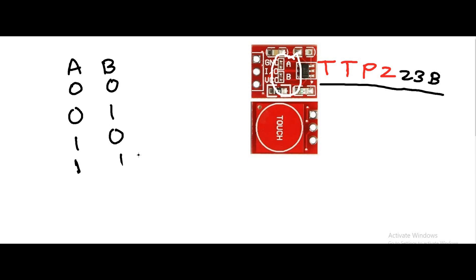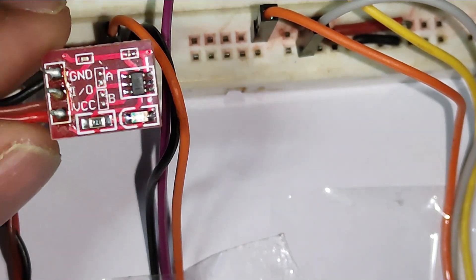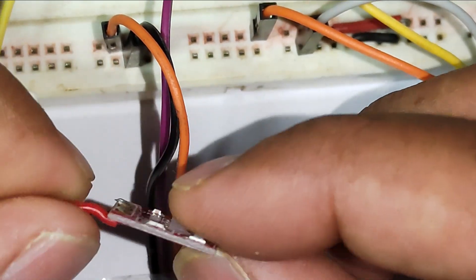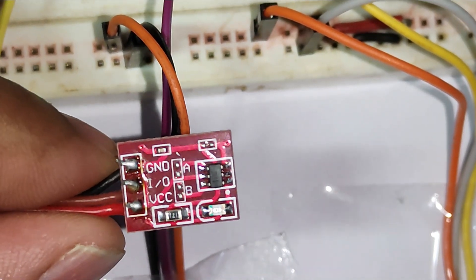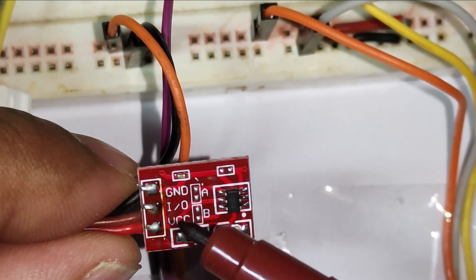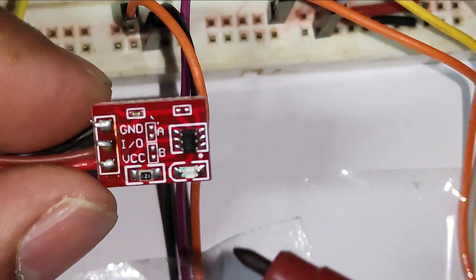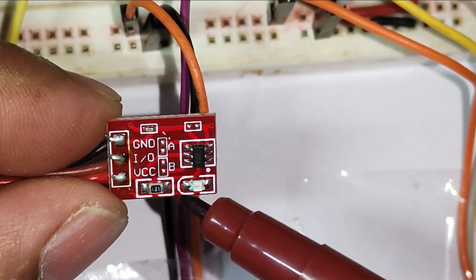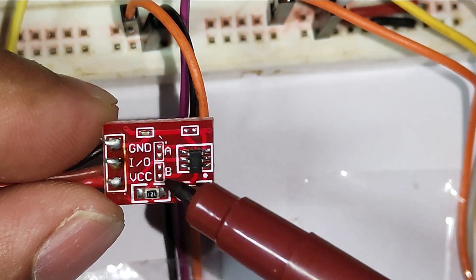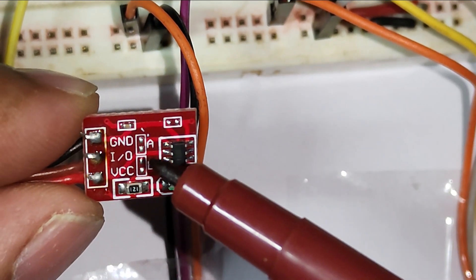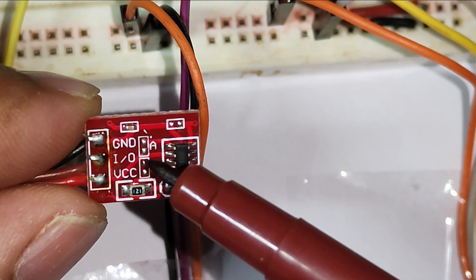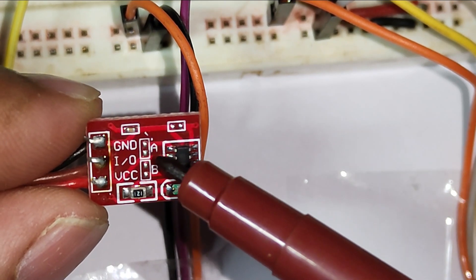Let us see the practical implementation and the working of this switch. I have a touch switch here. On the front side there is one ground, one IO out, and VCC. On the other side you have the touch plate. This is a capacitive type. There are four different ways we can work with it. You can see A and B here. If you keep both open, this is called logic zero-zero - A is zero and B is zero. If I short A it becomes one-zero, so A is at logic one and B is at logic zero.